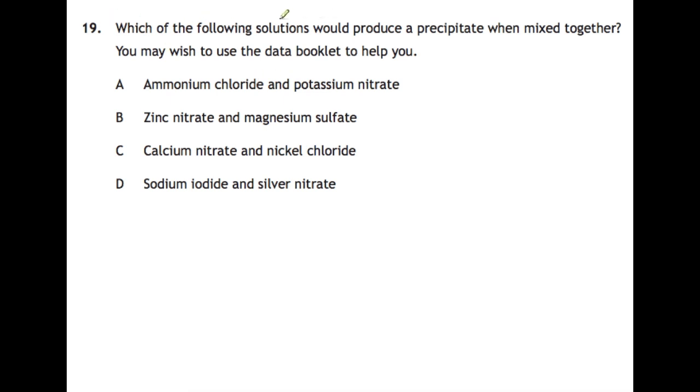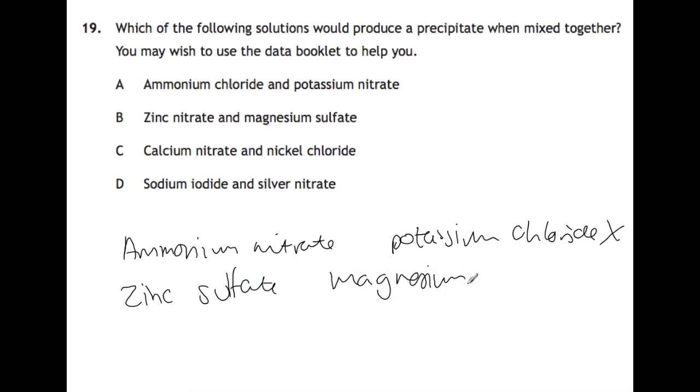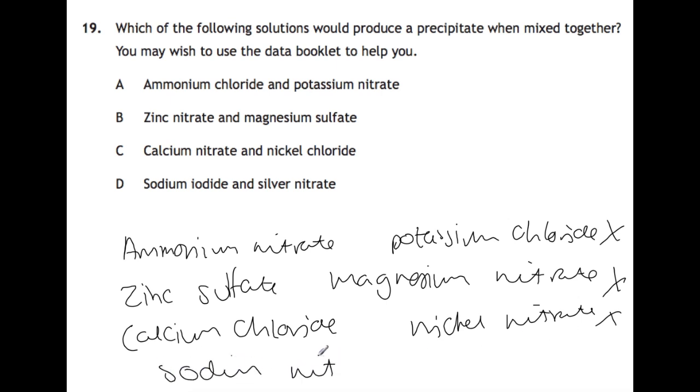Question nineteen: which of the following solutions would produce a precipitate when mixed together? You may wish to use the data book to help you. For this, you need to work out what the products will be. For A, you're going to swap them, so you'll end up with ammonium nitrate, which will be soluble, and potassium chloride, which is also soluble. For B, you'll have zinc sulfate and magnesium nitrate, both of those are soluble. For C, you will have calcium chloride, which is soluble, and nickel nitrate, which is also soluble. And then finally, you'll have sodium nitrate, which is soluble, and silver iodide, which is not soluble. So this one would be your precipitate, which means that D is your answer.